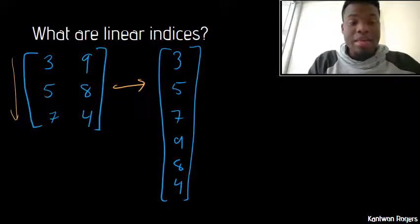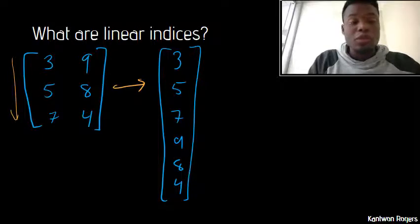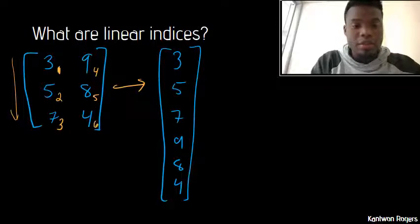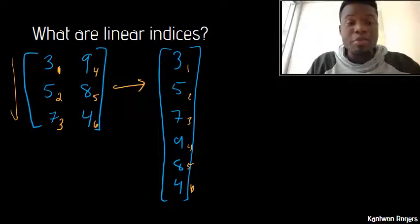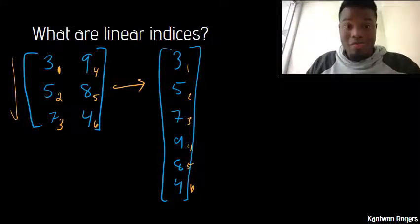I went down the columns and then across the rows. And that's the same thing that happens with linear indices. So for this array, this 3 is located at index 1, this 5 is at 2, this 7 is at 3, 4, 5, 6. And that's what matches this vector that's created in MATLAB. So when we're using linear indices, it's important to note that they go down the rows and then across the columns.